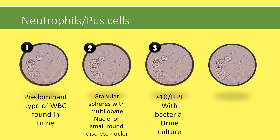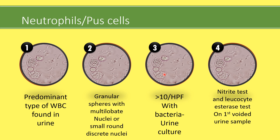Two other tests that can help detect urinary tract infection are the dipstick nitrite test and the leukocyte esterase test on the first voided urine sample. The nitrite test is done because gram-negative bacteria like E. coli, Salmonella, and Proteus, if present in urine, will reduce nitrate to nitrite via the bacterial enzyme nitrate reductase. This is a helpful screening test, but since organisms like Staphylococci or Pseudomonas do not reduce nitrate, a negative test may not rule out UTI. Also, it takes 4 hours for nitrite conversion, so the first voided sample must be used.